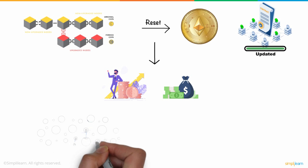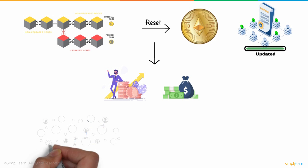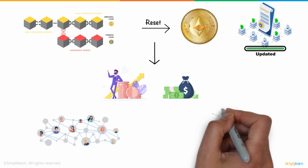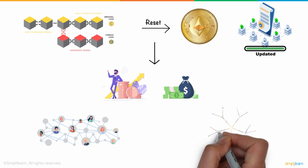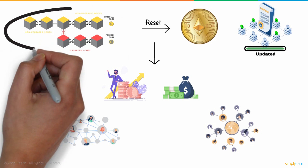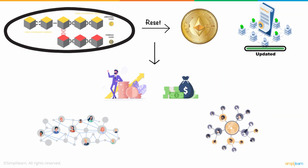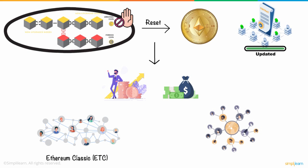As a result of the hard fork, two competing and now distinct Ethereum blockchains emerged. Those who opposed the hard fork, which wiped back the blockchain's history, backed the soft fork version, now known as Ethereum Classic. The Ethereum blockchain is the blockchain that implemented the hard fork, changing the blockchain's history.